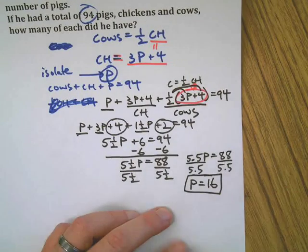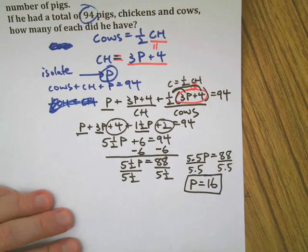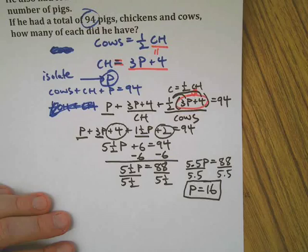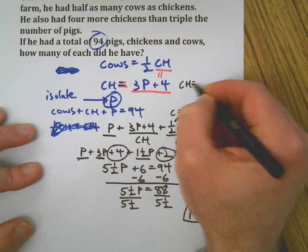I wasn't too sure about that with the five and a half there, but I think this is going to work out now. So if we have 16 pigs, let's go back up to our original equation. Chickens equals triple the number of pigs plus four.